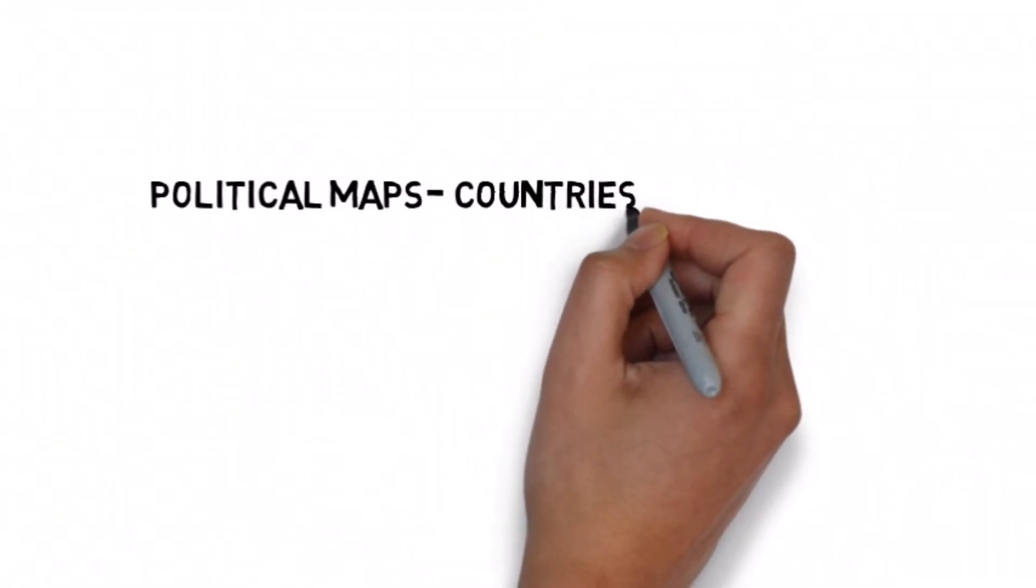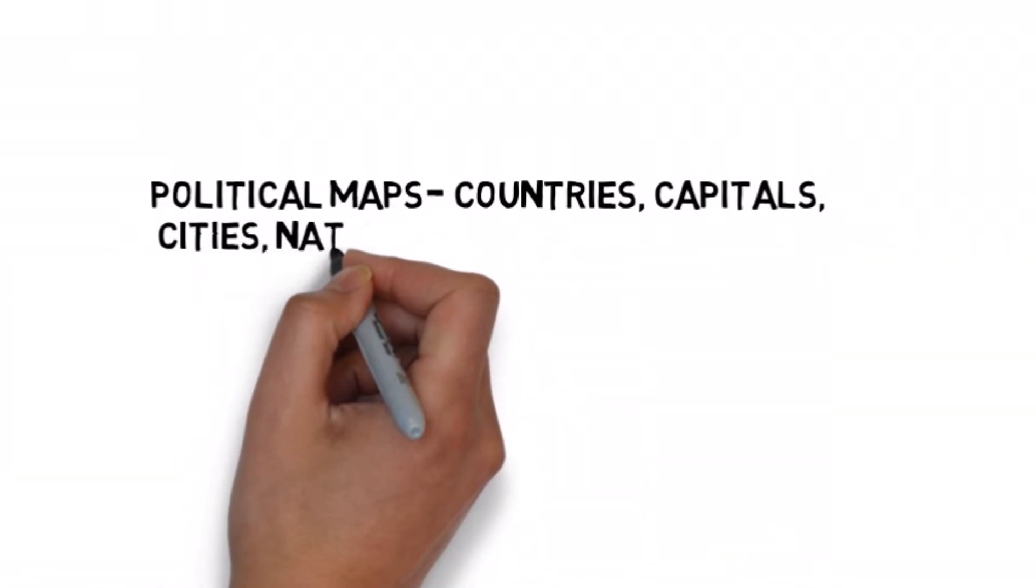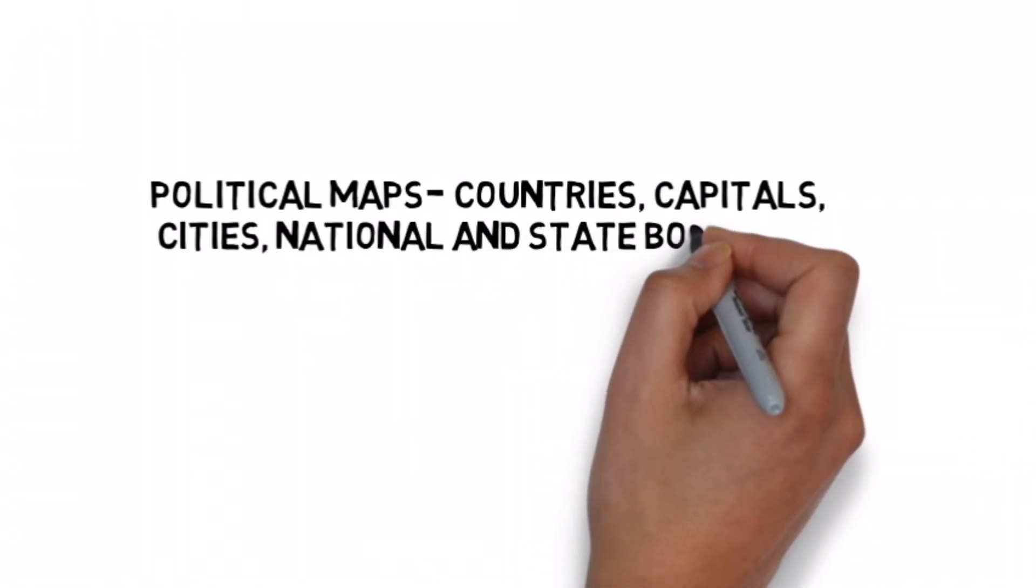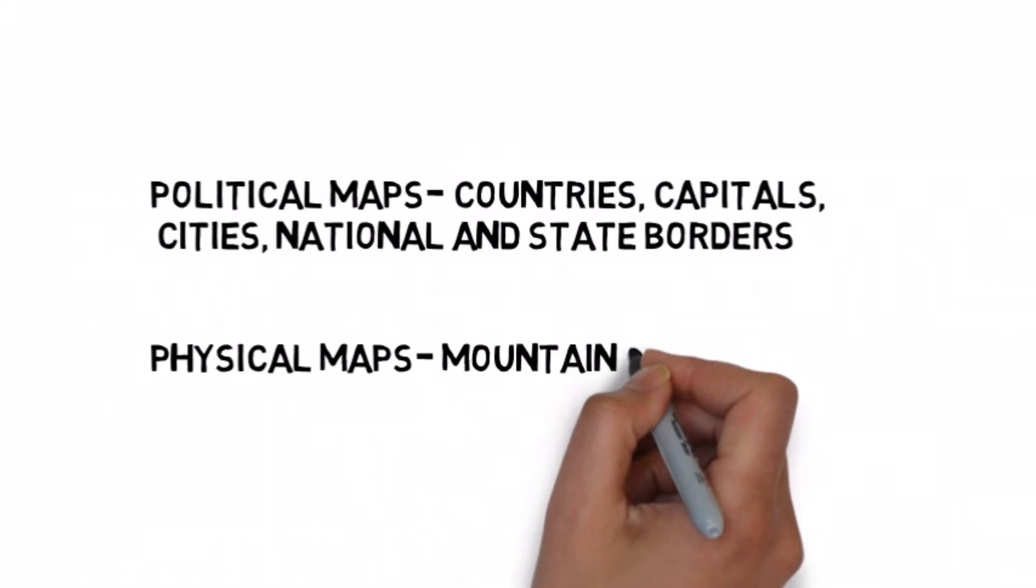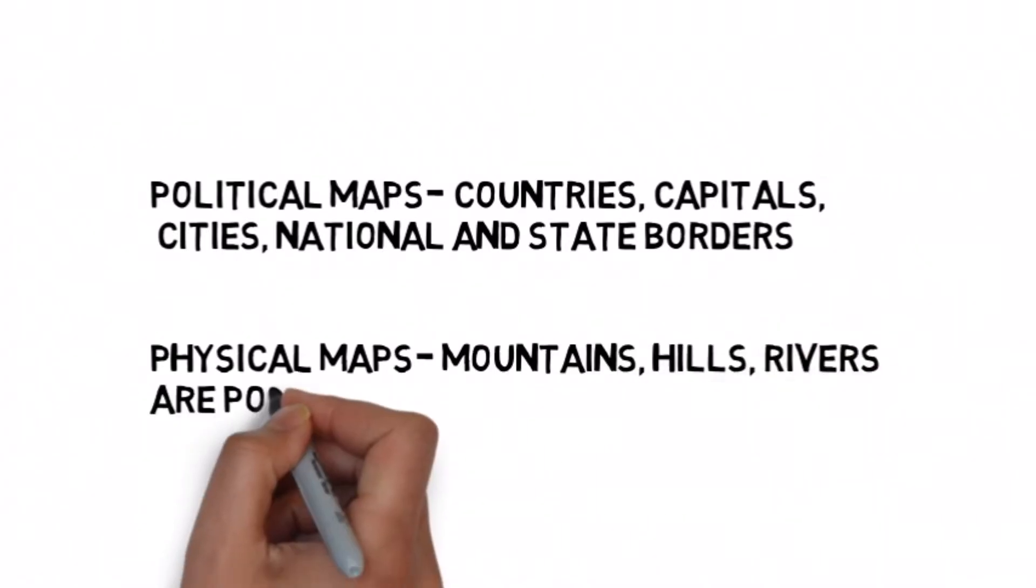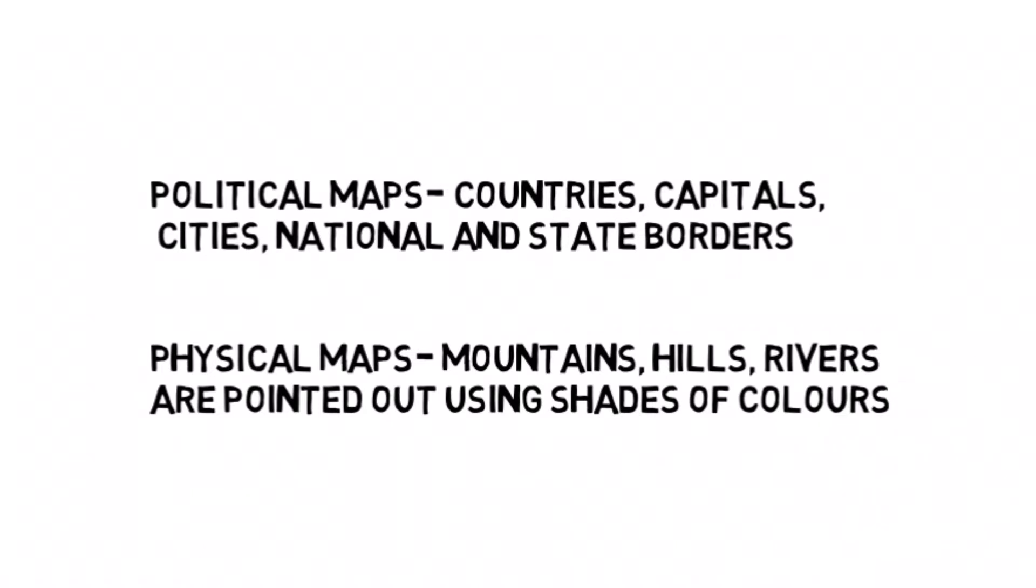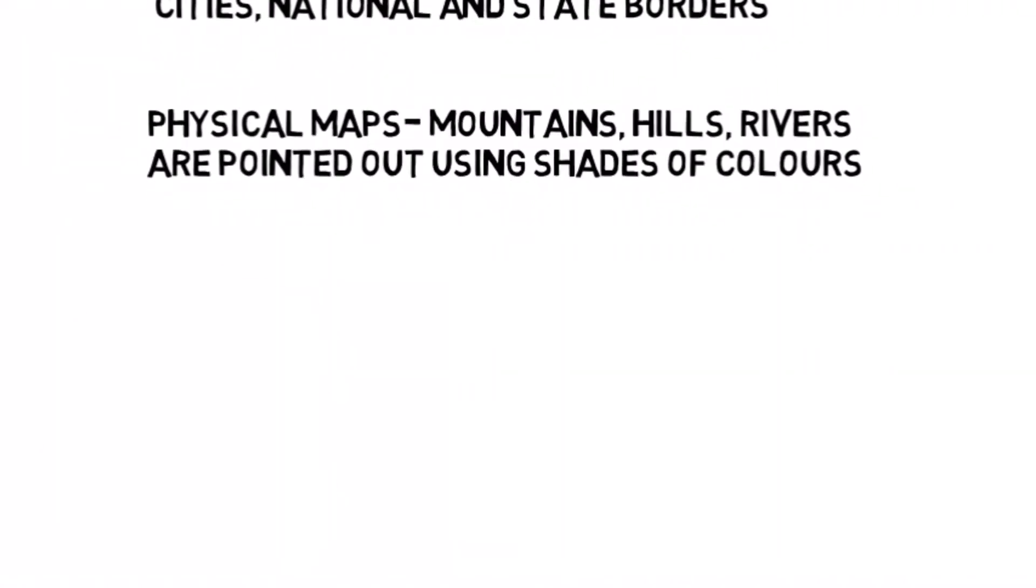Physical maps on the other hand show relief or physical features of a particular place, for example relief features like mountains, mountain ranges, hills, rivers, etc. The physical maps use different shades of colors to show the height of land or the depth of a water body. They are usually put in a small box which is called the map key or legend at the bottom of a map.